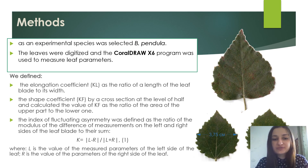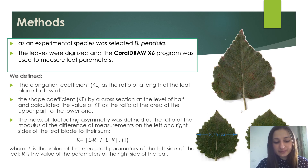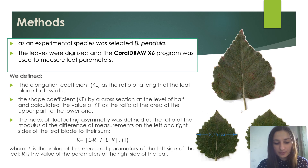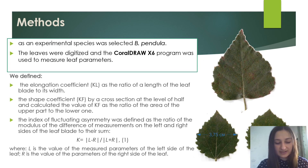As an experimental species, Betula pendula was selected. During the research, the morphological features of the leaf blades of the experimental species were studied. We compared the morphological reactivity on the industrial sites of ash and slack dump number 3 of Burshtyn Thermal Power Plant and on the protected area of Galician National Nature Park. The leaves were digitized and the CorelDRAW program was used to measure leaf parameters. We defined the elongation coefficient, the shape coefficient, and the index of fluctuation asymmetry. Biometric analyses of data were performed by the method of mathematical statistics.